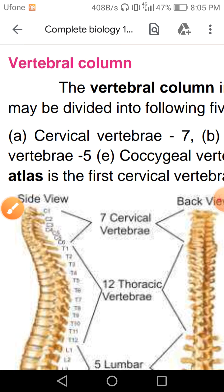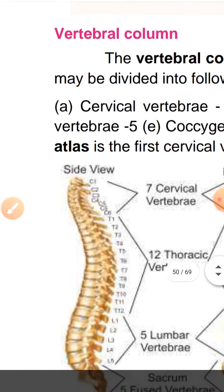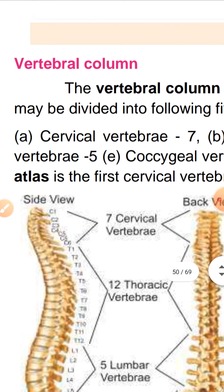The reason vertebrae are discontinuous is that you need to move your neck towards the right side or the left side. Your neck can move either towards the right or the left, and this movement is made possible by these 7 cervical vertebrae.